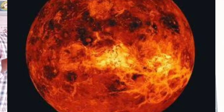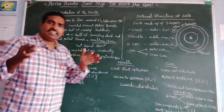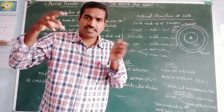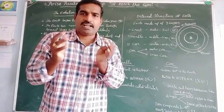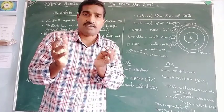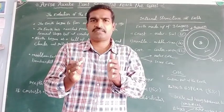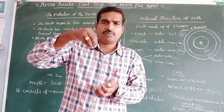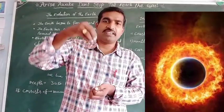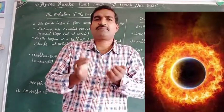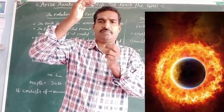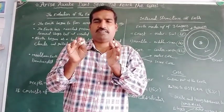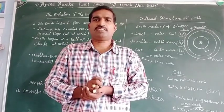The molten Earth was very hot and constantly bombarded by other massive rocks and materials from space. At the same time, the Earth's size had grown. When the Earth was very hot, heavy materials went to the bottom — inside of the Earth — and lighter particles came to the top. So presently, we live on the crust. This is the evolution of the Earth.